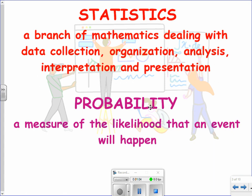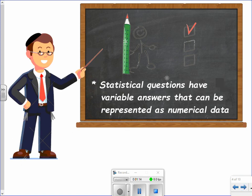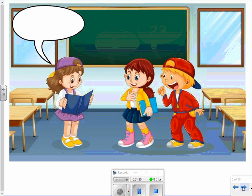Statistical investigations begin with a question, and the answers to such questions always involve variability in the answer to them. So statistical questions could have variable answers, and depending on the responses that match different answers, we could collect those responses as numerical data. But not every question is a statistical question.